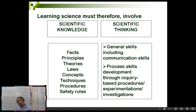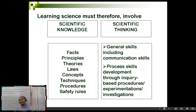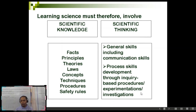Doing and learning science must also involve scientific thinking. Scientific thinking involves general skills like communication skills — which you can use not just in science but in all subjects and in daily life — as well as process skills, such as inquiry-based procedures and conducting experimentations and investigations, which you already covered in Research 1 in Grade 7.